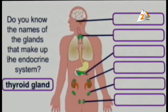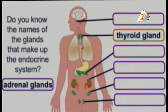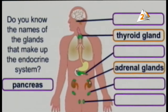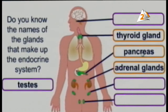Now, do you know the names of the glands that make up the endocrine system? If you study it well, you can identify them correctly. The thyroid gland is found near our larynx. The adrenal gland is found above the kidneys and produces the adrenalin hormone. The pancreas — which we studied in the digestive system — produces insulin, a protein hormone that controls blood sugar and is related to diabetes.